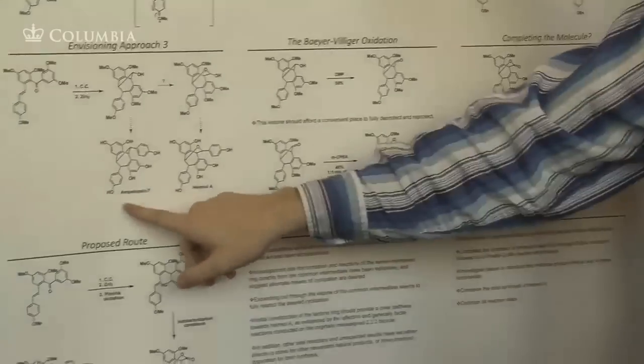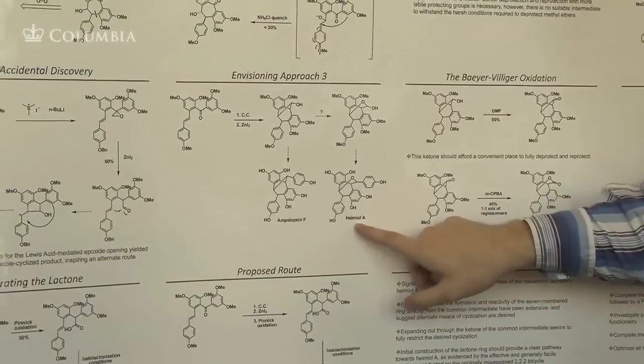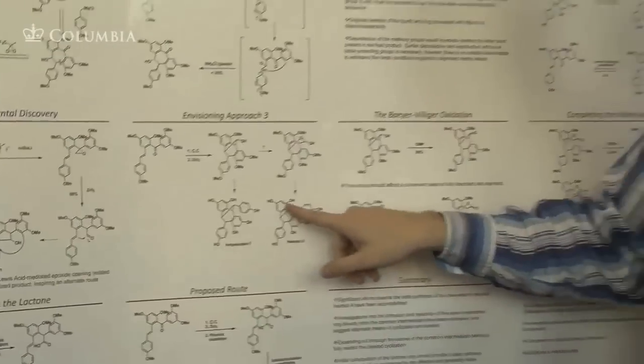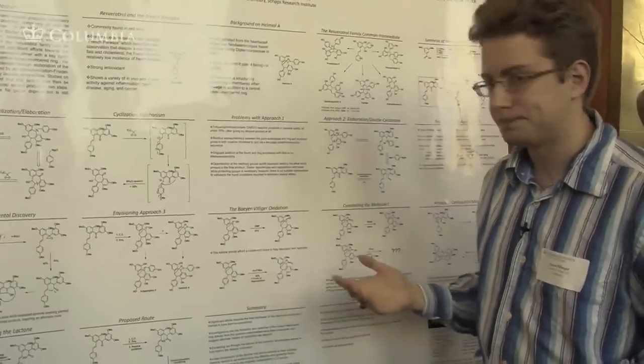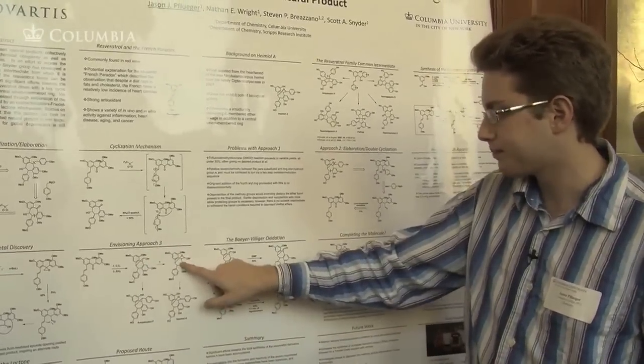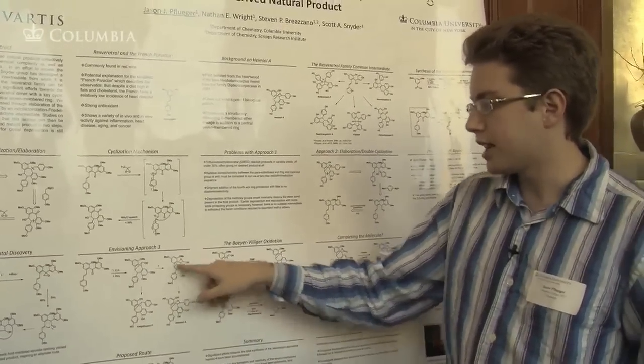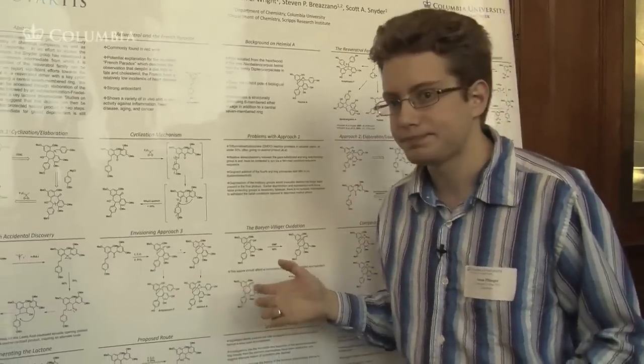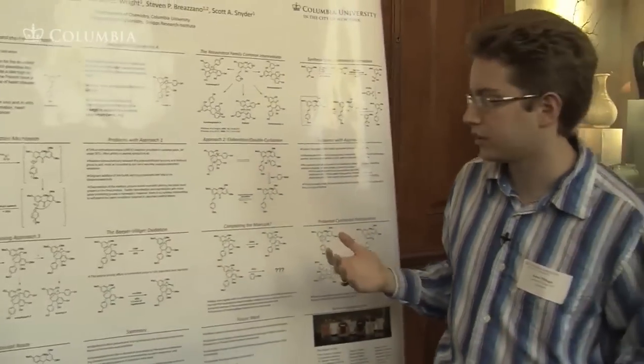However, on comparing the natural products, we realized that Ampelopsin F and my molecule, Hymyol A, are different only in this oxygen atom in this bridge system. So the question then became, can we add an oxygen into this ring to get us to this compound, to then take this to Hymyol A instead? Our attempt to answer that was the Baeyer-Villiger oxidation.